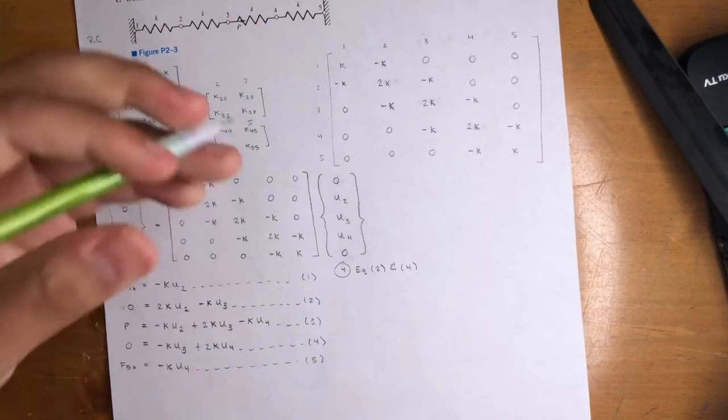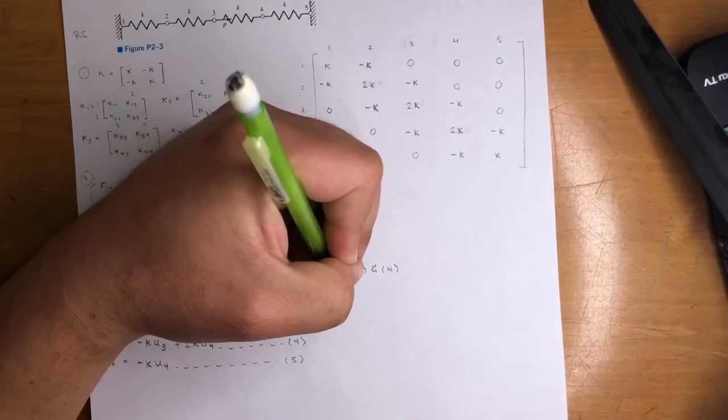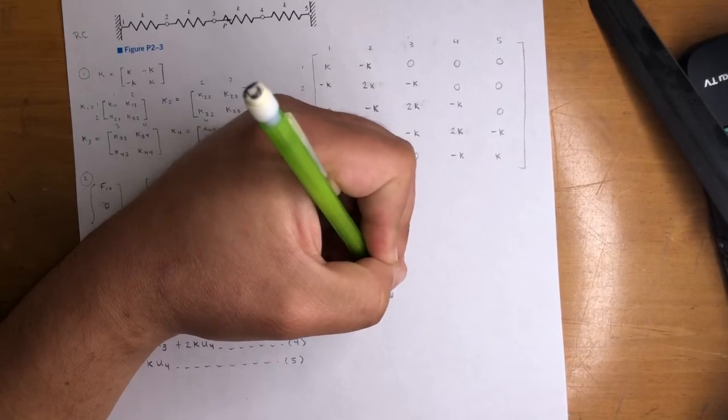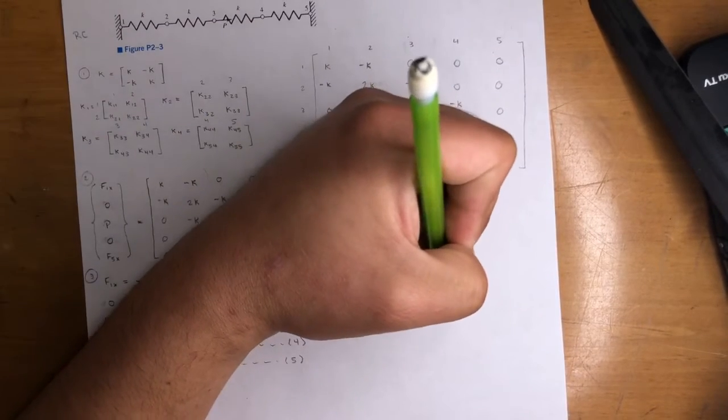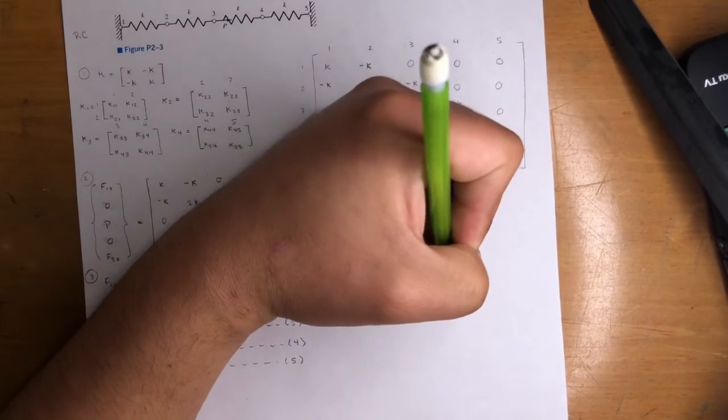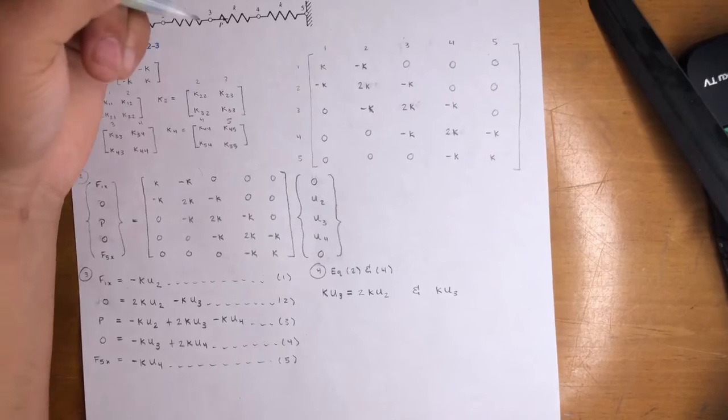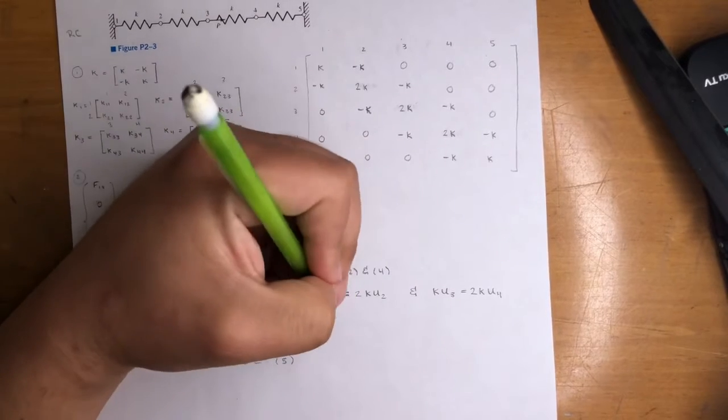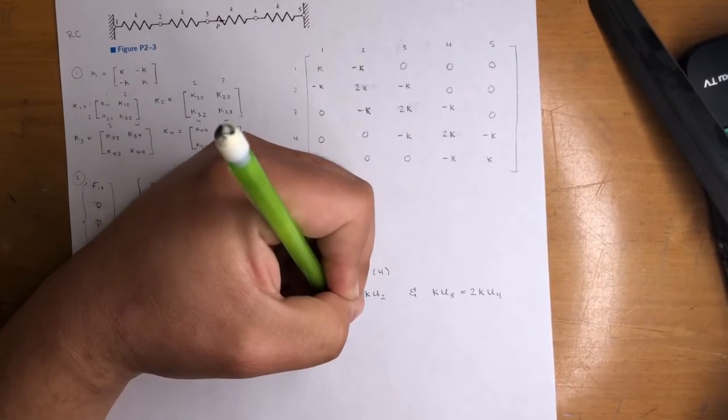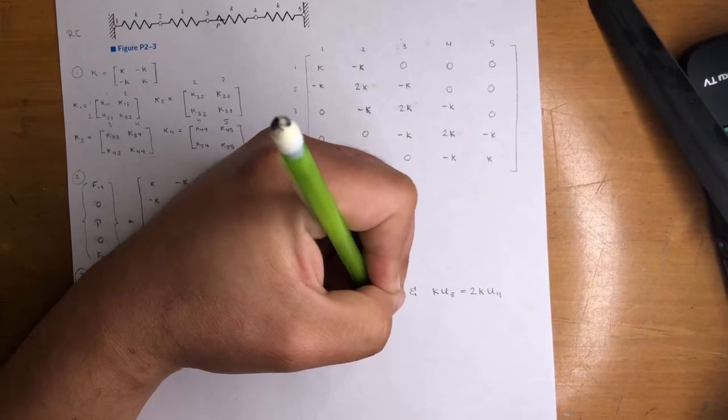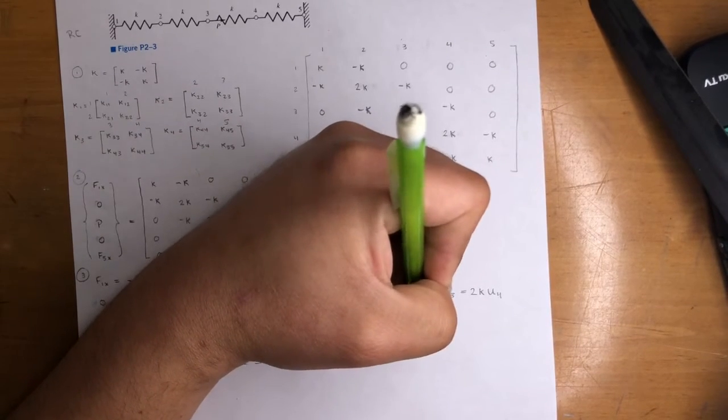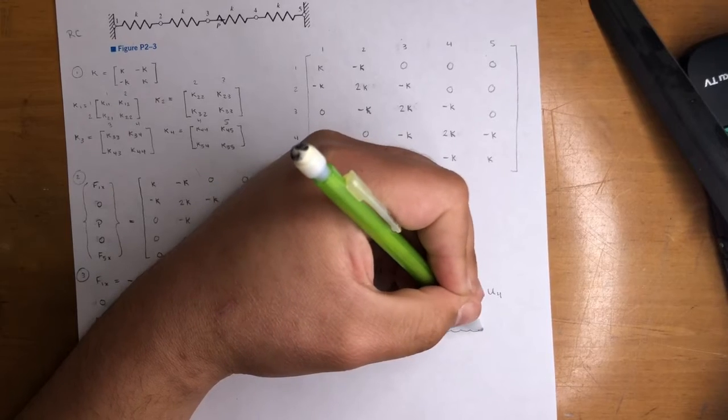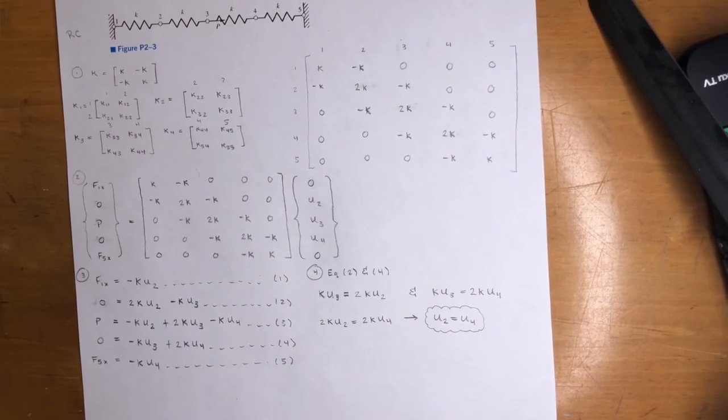So just by looking at them, look, we can move ku3 over here and ku3 over here and set them equal to each other. So let me put equation two and four. Alright. So equation two is ku3 is equal to 2ku2. And then similarly, for equation four, we'll put and ku3 is equal to 2ku4. So we can set them equal to each other, right, 2ku2 is equal to 2ku4. And that just means u2 is equal to u4. Now, this isn't an answer. This is just a relationship. So it's going to help us. It's good to know that they're equal.